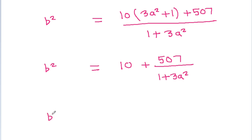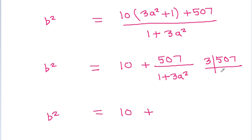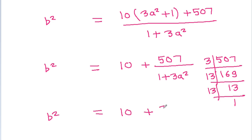And b squared is equal to 10 plus 507 divided by 1 plus 3a squared. Now 507 factors as 3 times 169, which is 3 times 13 times 13, divided by 1 plus 3a squared.